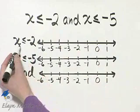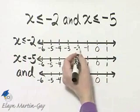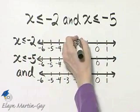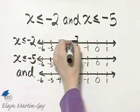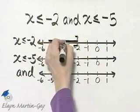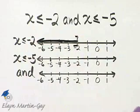So let's first graph x ≤ -2. I go to -2, place a bracket at -2, and shade less than -2, which is to the left of -2.